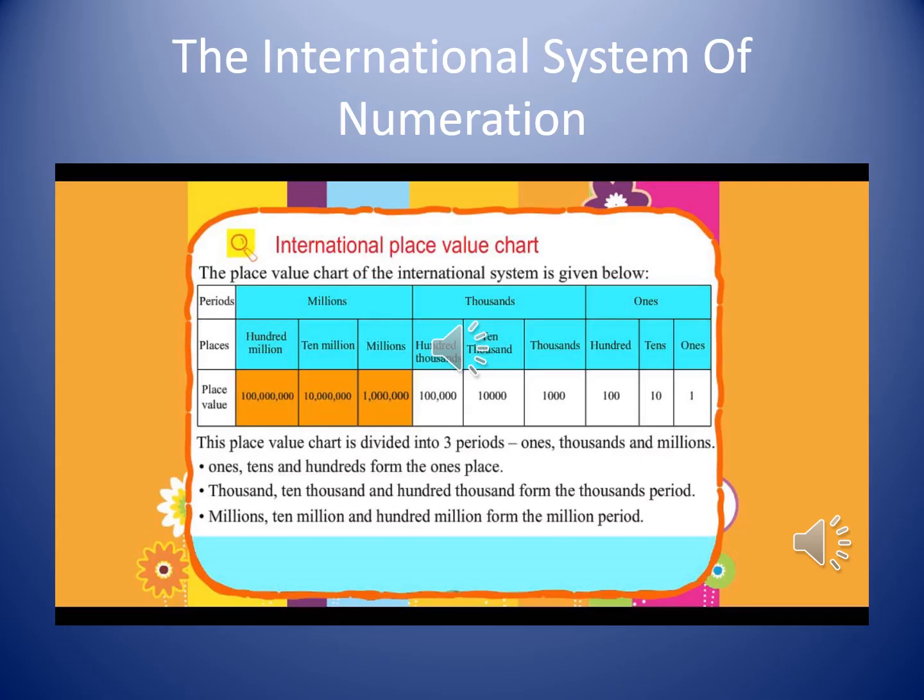The places in different periods are: in the ones period, the places are ones, tens, and hundreds.